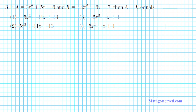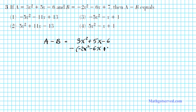Alright, let's take a look at question three. It says if a equals 3x squared plus 5x minus 6 and b equals negative 2x squared minus 6x plus 7, then a minus b equals. Here we are subtracting polynomials. Any time you're subtracting polynomials you have to be really careful with the signs — the most common mistake students make in subtracting polynomials is errors associated with the signs. I like to do it in a vertical orientation so I can keep my work organized and avoid making mistakes.